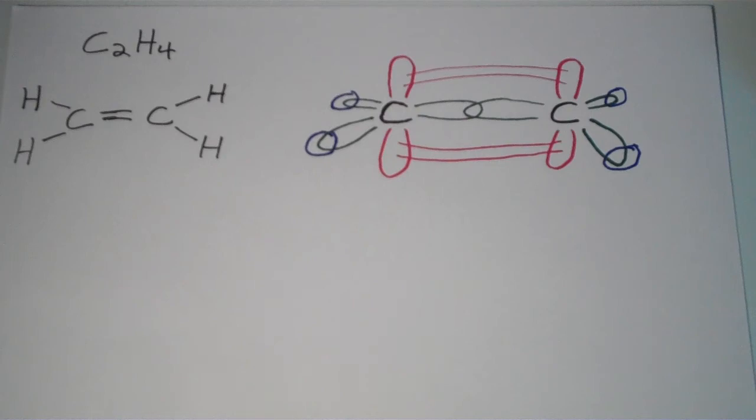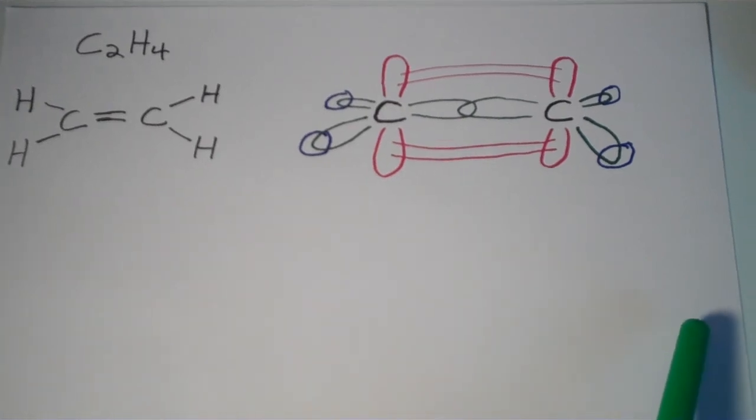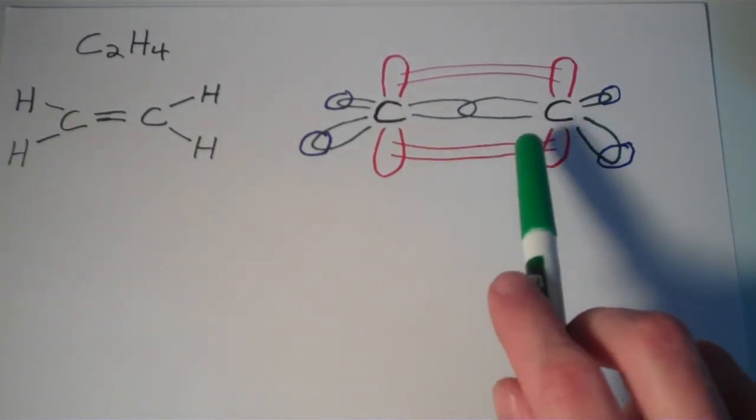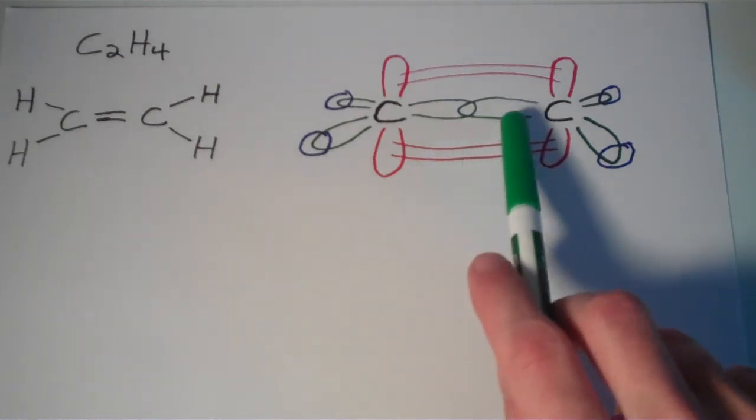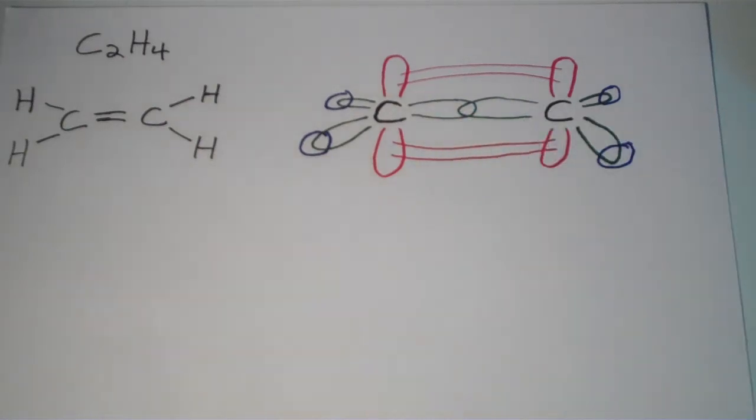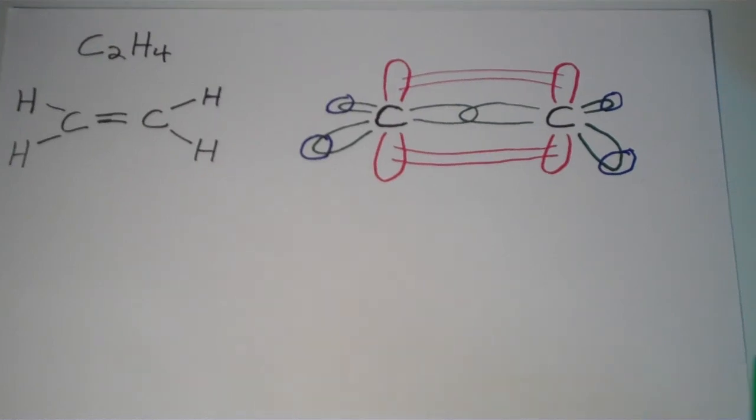So these blue spheres are supposed to represent hydrogen atoms. And then when we talk about the double covalent bond, we're talking about a sigma bond, a direct overlap between two of the sp² hybrids. And then we're also talking about a pi bond between the two unhybridized p orbitals.